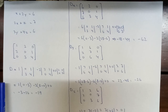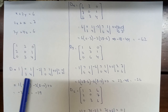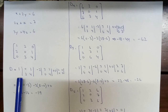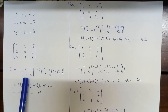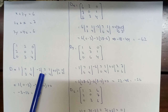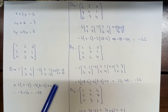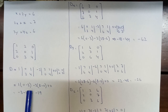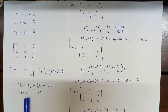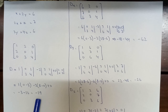We write the determinant: 1 times (0 times 4 minus 3 times 1) gives 0 minus 3, which is minus 3. Minus 2 times (2 times 4 minus 0) gives minus 2 times 8, which is minus 16. So the determinant D equals minus 3 minus 16, which equals minus 19.